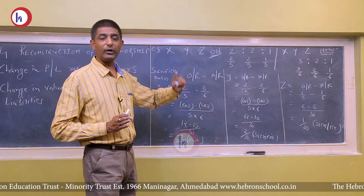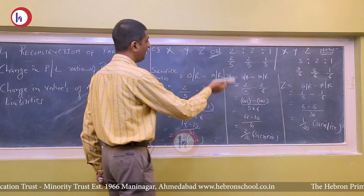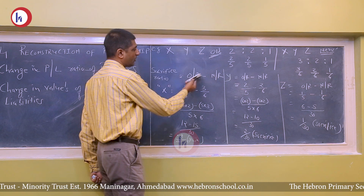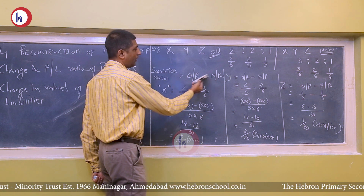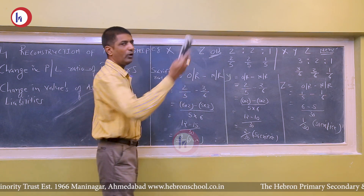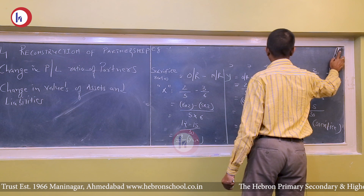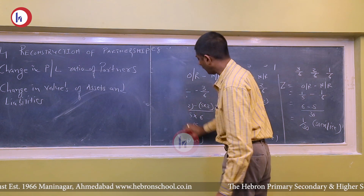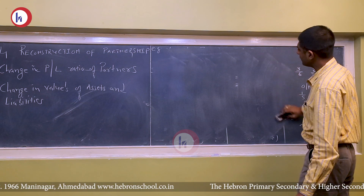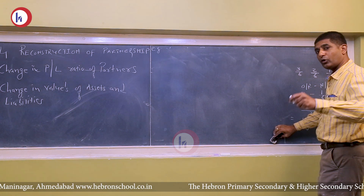Now I am going on to the sums related to gain ratio. The gain ratio formula uses the same two components but in reversed order. Sacrifice ratio = Old ratio − New ratio. Gain ratio = New ratio − Old ratio. When using the sacrifice ratio formula and getting a negative answer it is a gain; similarly, when using the gain ratio formula and getting a negative answer, it is treated as a sacrifice.